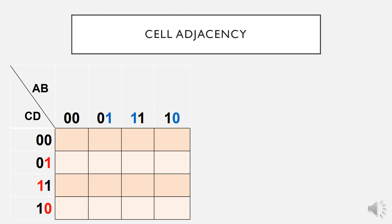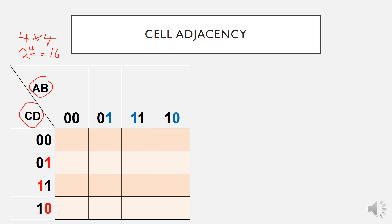How do we label our K-Map? In this example, I will use a 4-by-4 K-Map, which is 2 input variables by 4 combinations, for a total of 16 combinations. Since we have 4 input variables, I name them AB and CD, giving us 4-by-4 cells. Next, how do we label each cell? In a K-Map, the cells next to each other can only change a single variable between them.